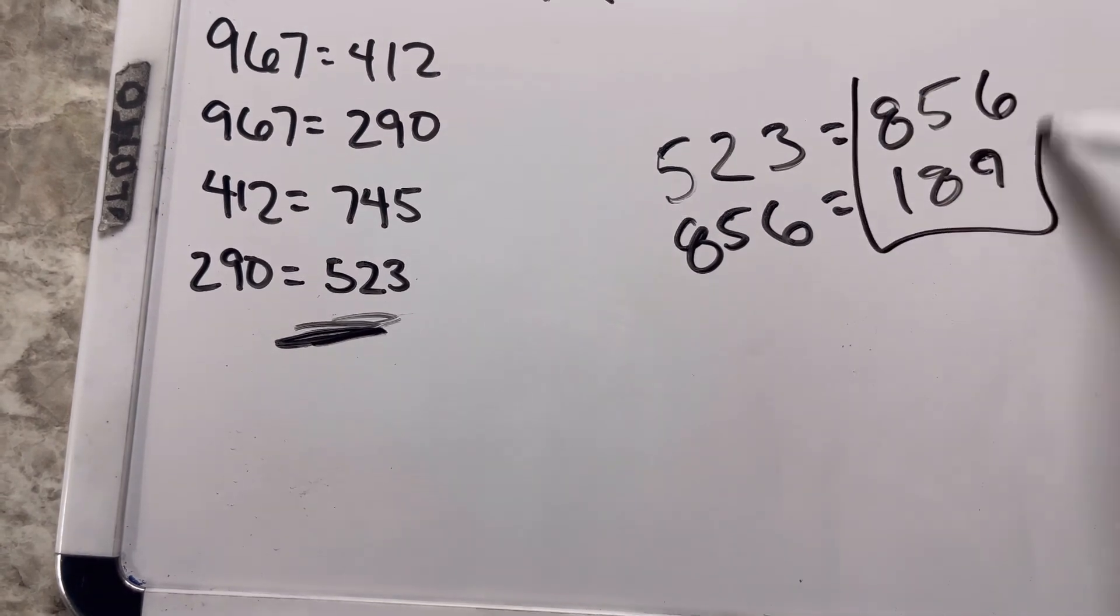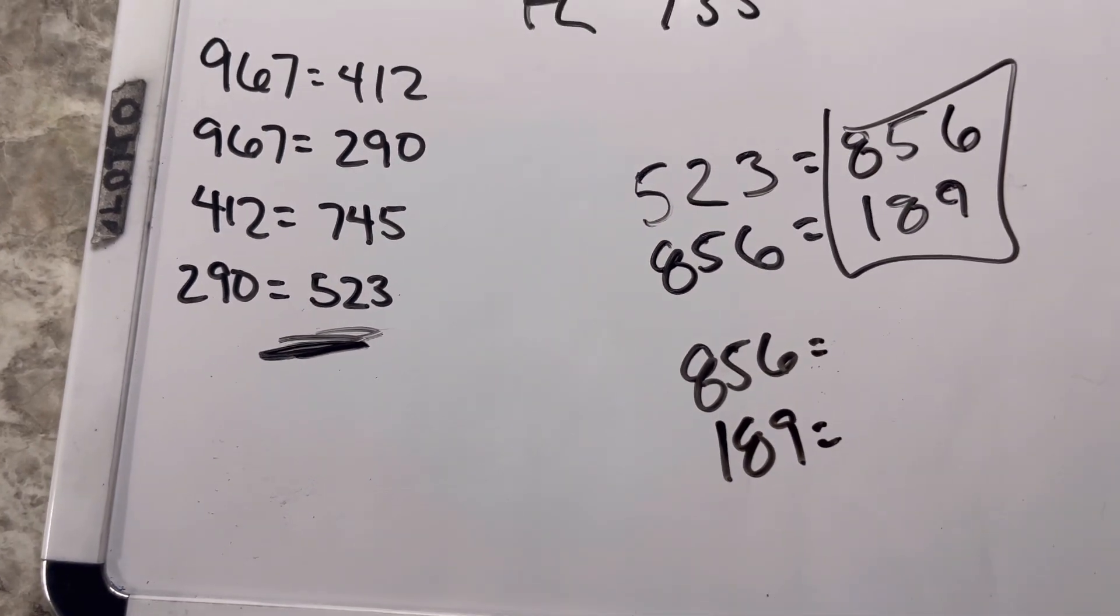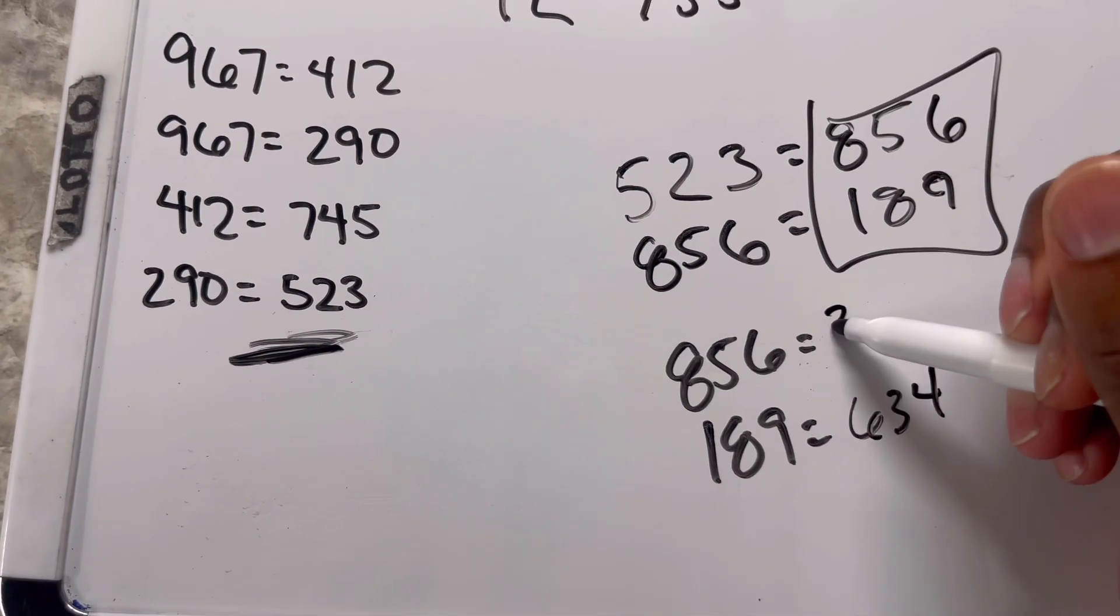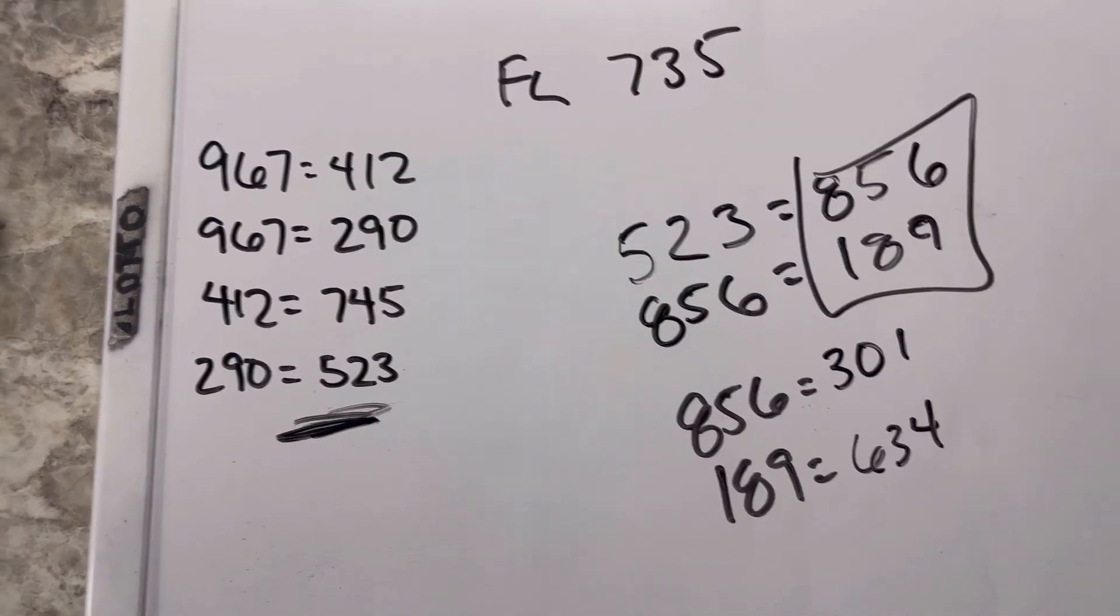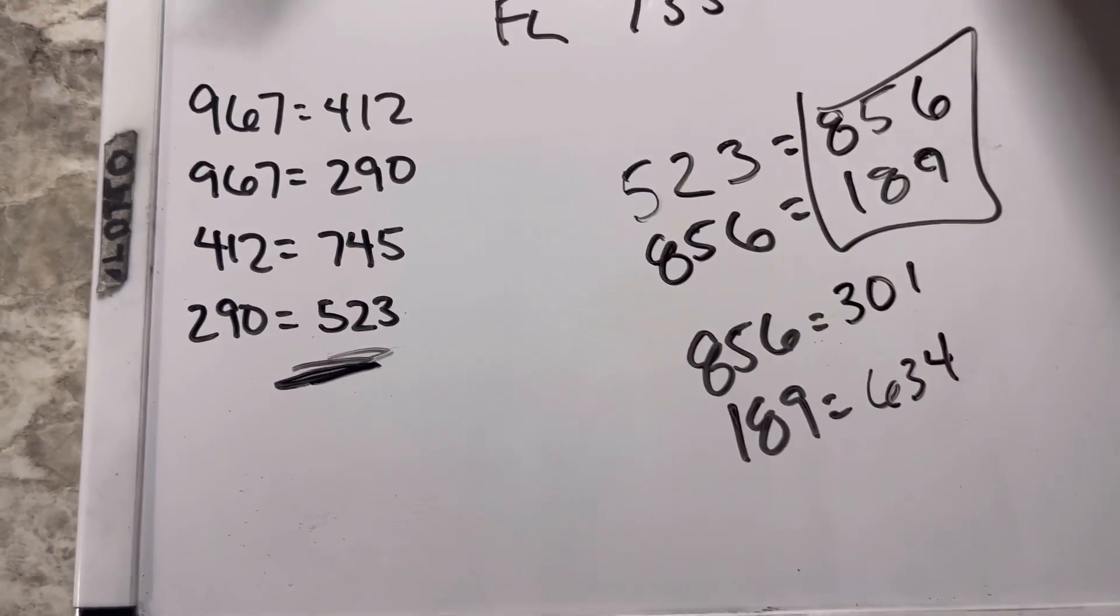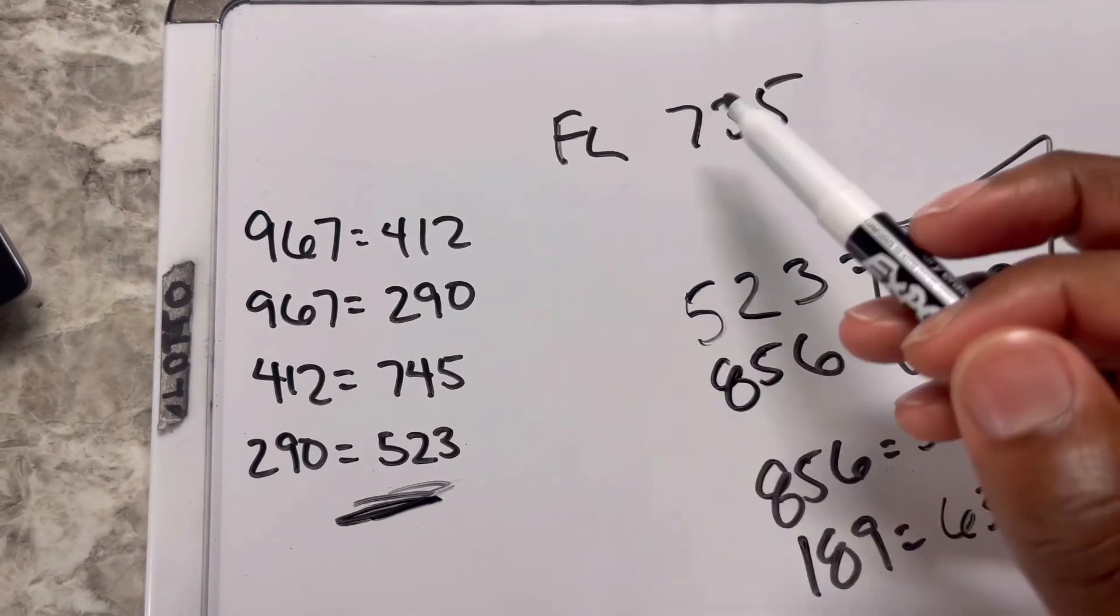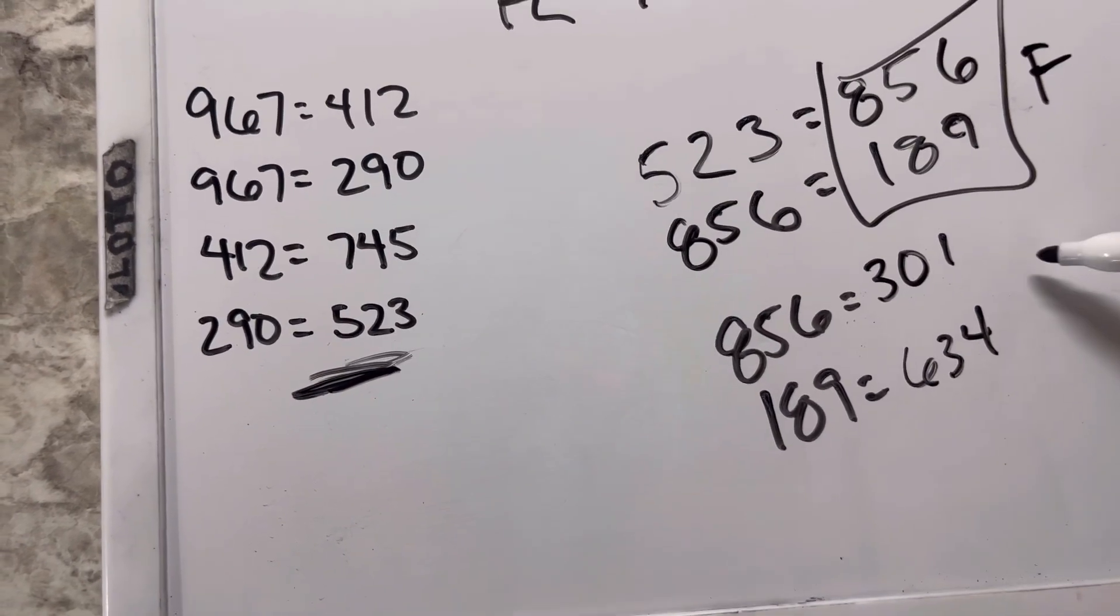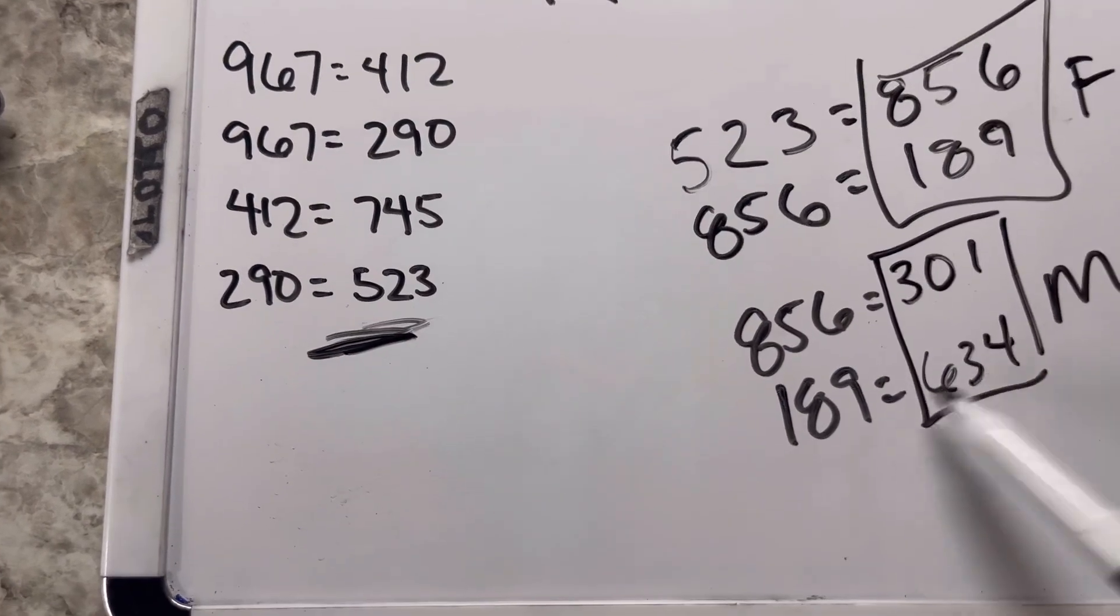We're gonna convert these two numbers, 856 and 189, into the mirror numbers, which gives us 634 and 301. Just try it out for your state, I don't know, I feel like this is gonna work. After you've done what I showed you before, convert the closest number to the winning number into the flip number, and these are the mirror numbers. You can play 856, 189, 301, and 634.